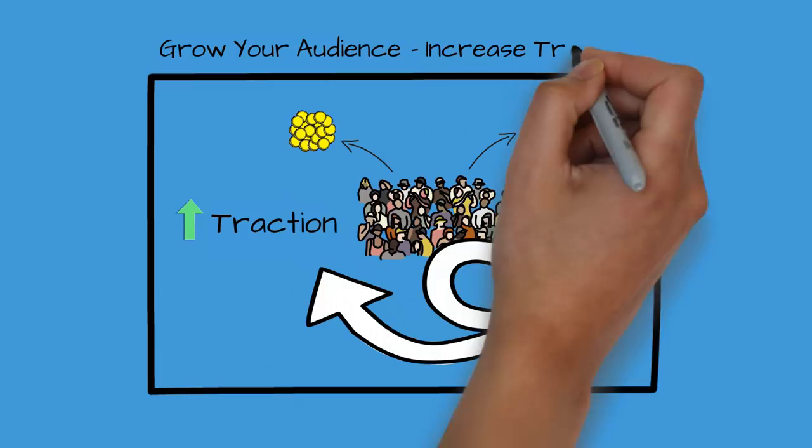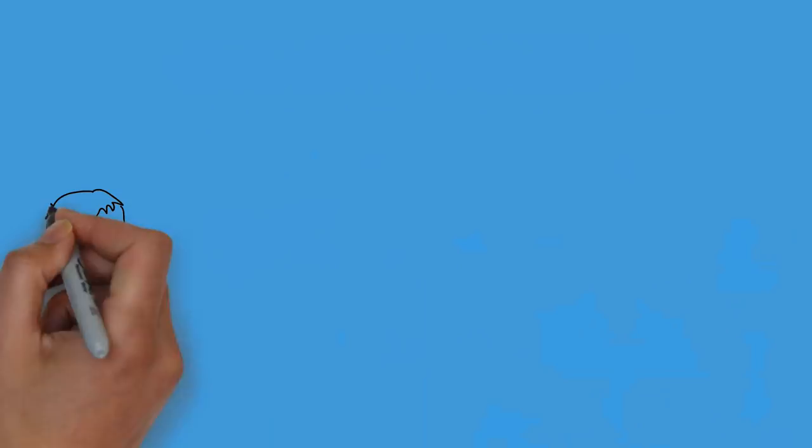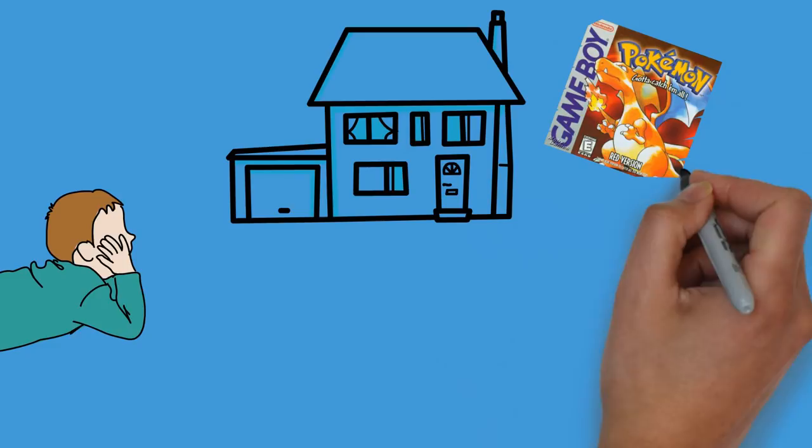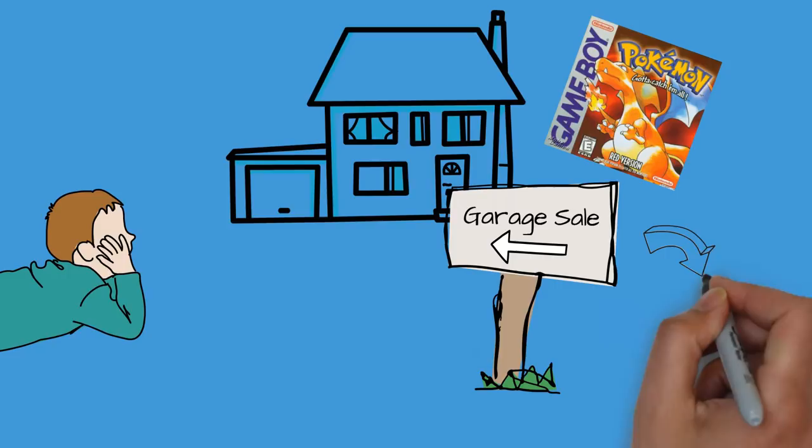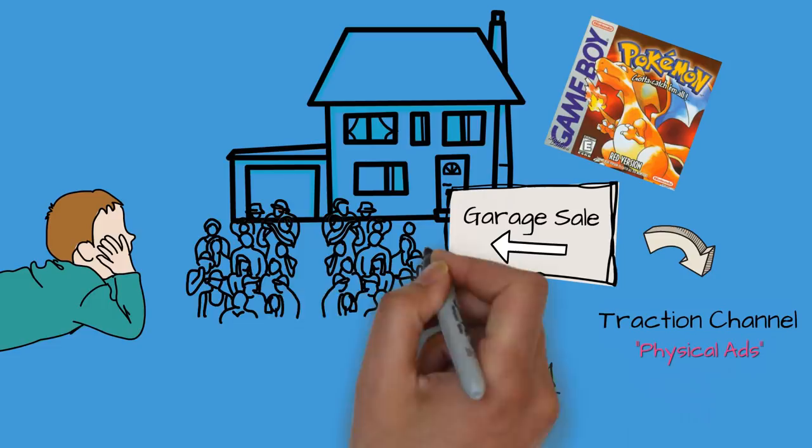When I was a kid, I remember making a garage sale in order to make enough money to buy the Pokemon game that just came out. I went and put out signs showing people where my garage sale was. I didn't know it at the time, but I was using a type of traction channel, physical ads, to tell people about my business.